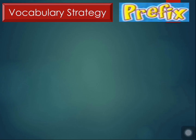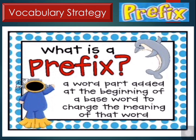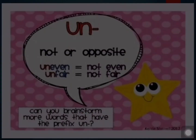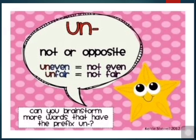Now let's look at the vocabulary strategy: prefixes. A prefix is a word part added at the beginning of a base word to change its meaning. For example, the word happy becomes unhappy. We also have mis- as a prefix, like misspelled — the base word is spelled and mis- is the prefix. The prefix un- means not or the opposite. For example, uneven means not even, and unfair means not fair.